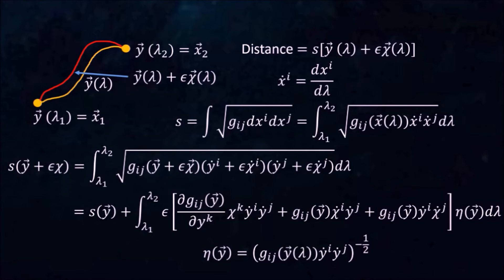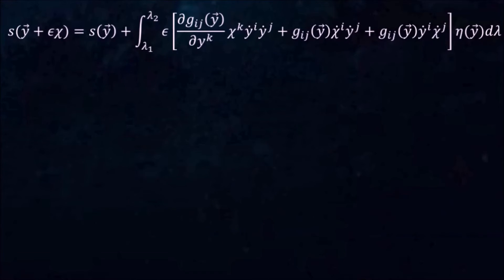If y is the curve that minimizes s, then this entire expression must be 0. Here's the same expression again. Notice that the first term in the brackets contains chi, while the other two terms contain chi dot. We can apply partial integration to the last two terms in order to convert chi dot into chi.